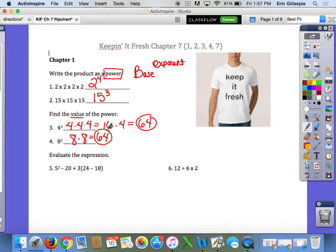The next two problems utilize order of operations. In number 5, we do parentheses first. So we have 5 squared minus 20 plus 3, and then 24 minus 18 is 6. Now I've got exponents, subtraction, addition, and multiplication, so exponents come next. 5 to the 2nd means 5 times itself twice, so that's 25. Next comes multiplication, because the number next to parentheses means multiply. So 3 times 6 is 18.